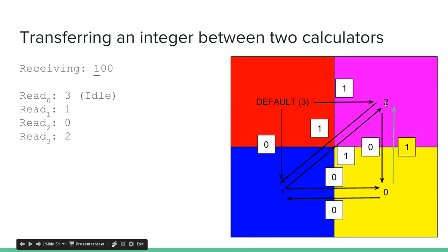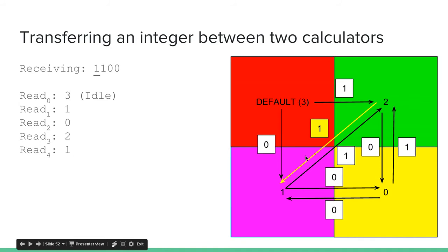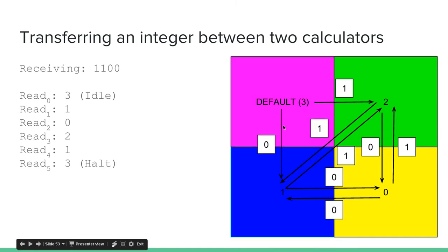Then we're going to read the value 2, which is defined as 1, then we're going to read the value 1, which is defined as a 1. Then we're going to read the default again, so that's halt. So we read 3, 1, 0, 2, 1, 3, and that corresponded to 0, 0, 1, 1.